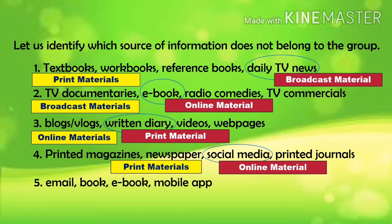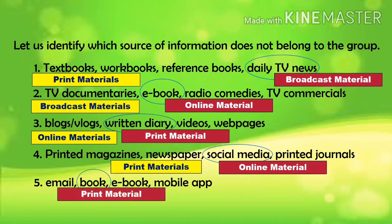Let us move on to the last number. We have email, book, e-book, and mobile app. Book is the correct answer because book is an example of print material while email, e-book, and mobile app are examples of online materials.